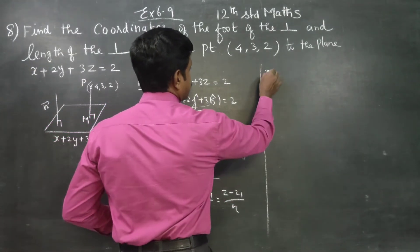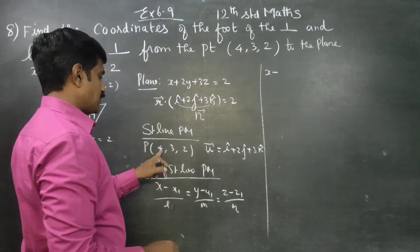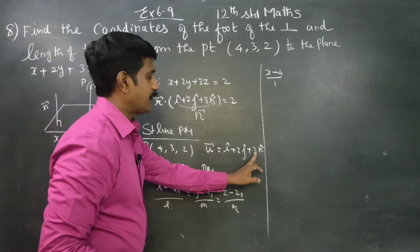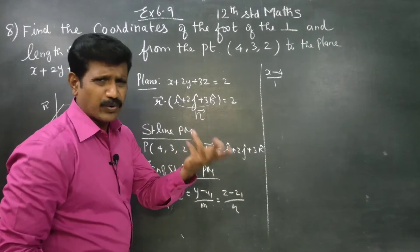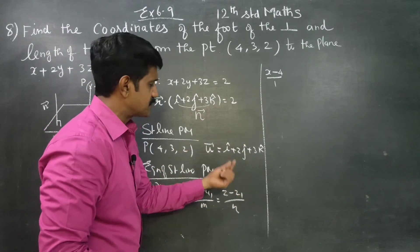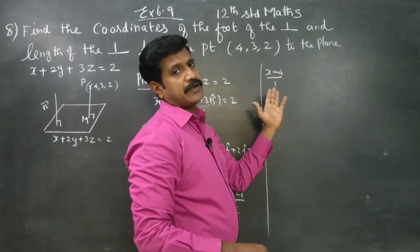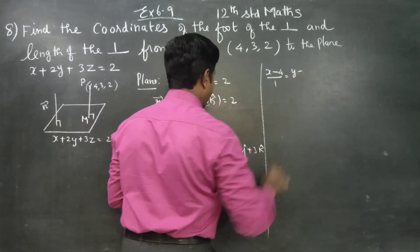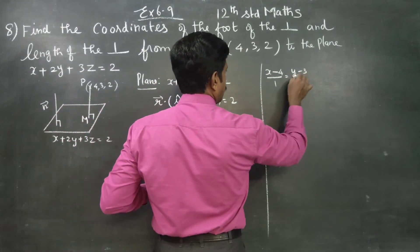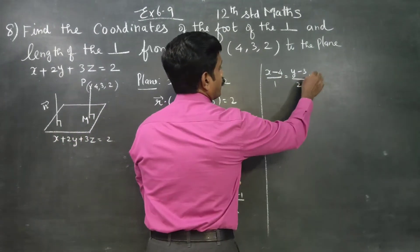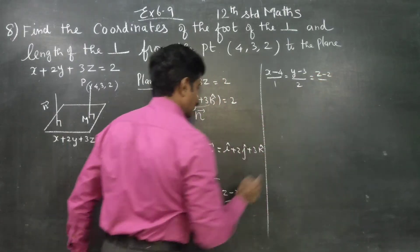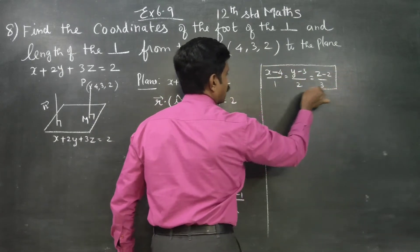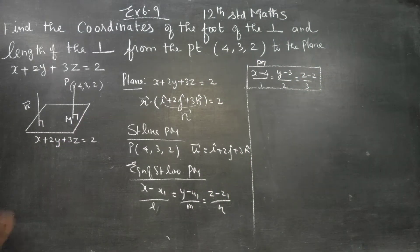Substituting: x1 is 4, so (x minus 4) by 1; y1 is 3, so (y minus 3) by 2; the direction ratios are 1, 2, 3; and z1 is 2, so (z minus 2) by 3. This is the equation of line PM.